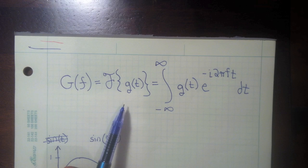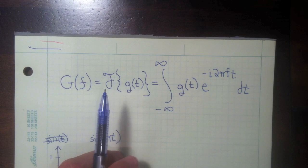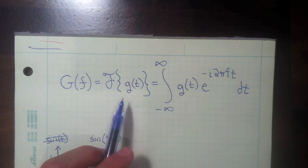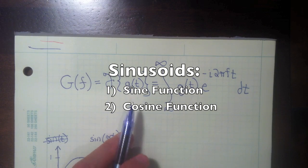So the Fourier transform in English states that any function g of t can be decomposed into the sum of simple sinusoids. So what that means is you can take any function g of t and decompose it into a sum of sine and cosine functions.